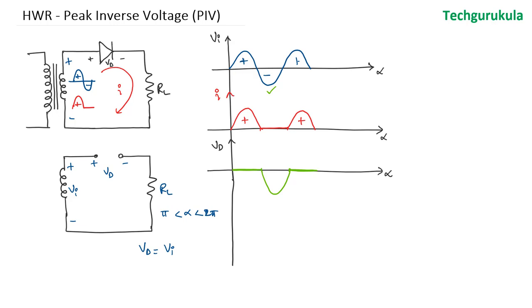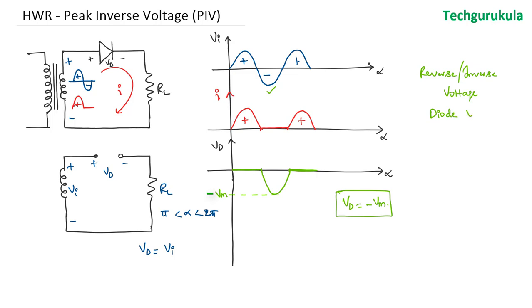The maximum voltage that gets applied across the diode when it is in reverse bias is Vm, which means the diode voltage VD equals minus Vm. Since the voltage is negative and the diode is reverse biased, we must note that when we reach this maximum voltage the diode should not break down. This is the maximum voltage applied across the diode. Considering reverse or inverse voltage, the peak inverse voltage applied across the diode is Vm — we do not take the minus sign since it is already implied as reverse.